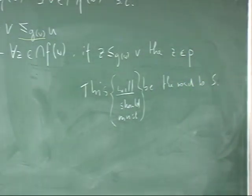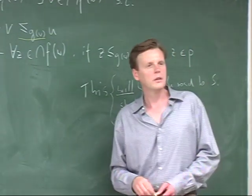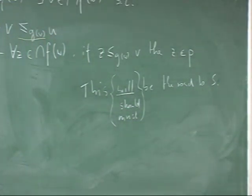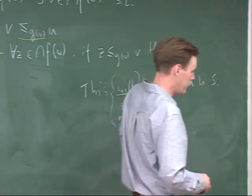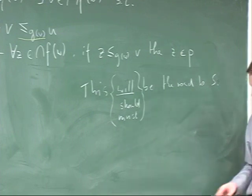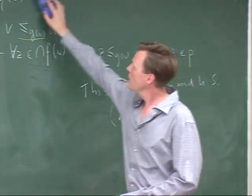For graded modality, you can modify the assertion in various ways: 'This is probably the road to Springfield,' 'maybe,' 'might be,' 'there is a good possibility that this is the road to Springfield,' and so on.